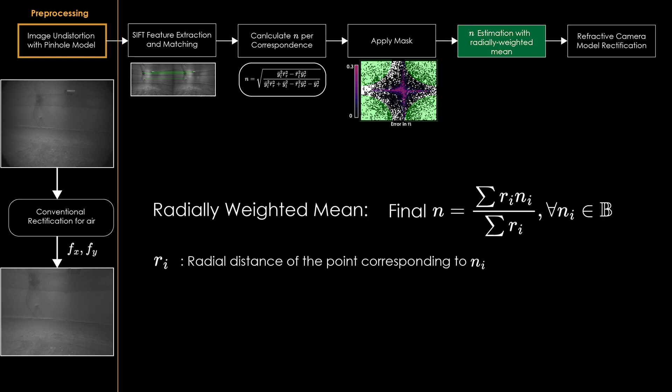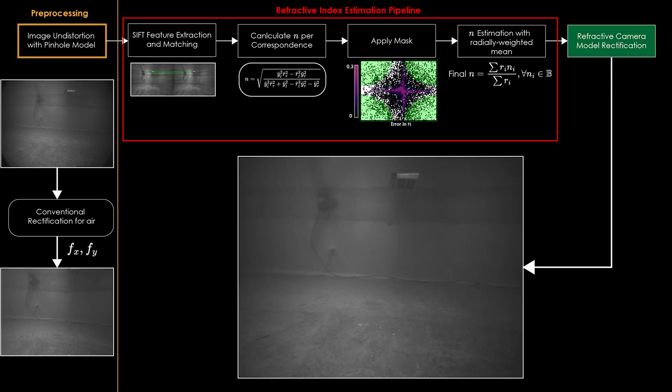The final refractive index is calculated by taking radially weighted mean of the refractive indices in the buffer and the image is rectified.